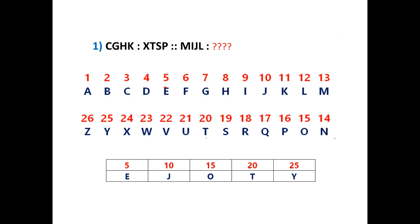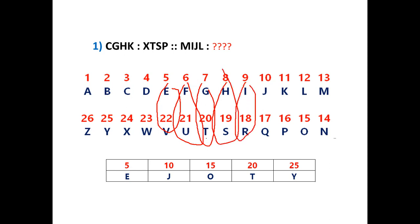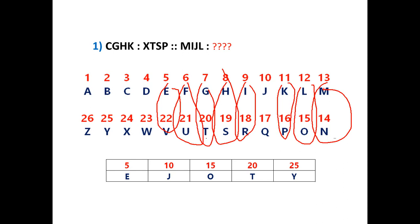We also need to remember opposite letter pairs. For example: AZ, BY, CX, DW. Then EV — remember EV pad. FU — Kung Fu Panda. GT — grand total. HS — high school. IR — IR radiation. JQ — Jackwind. KP — Karthik Pavan. LO — LOMGA. MN — make a shortcut that is easy for you to remember. Like that we need to remember all these pairs.